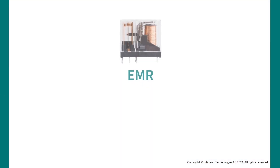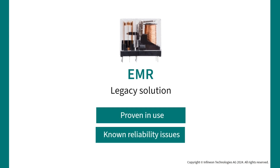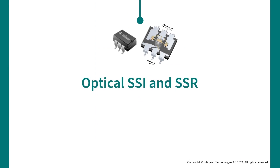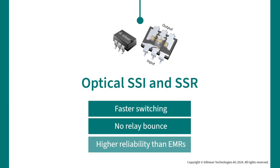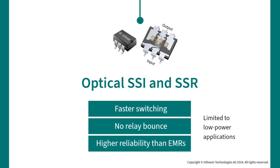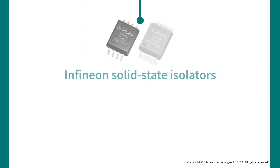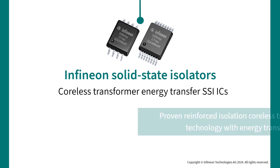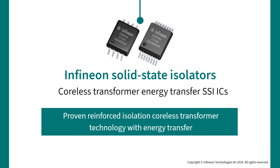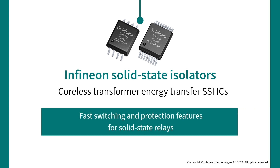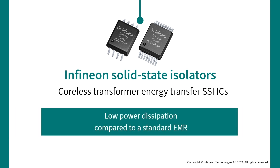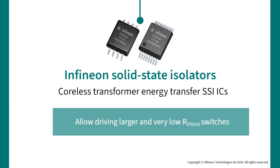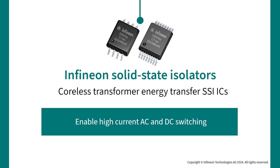Electromechanical relays have a significant presence in the market with proven performance but known reliability issues. Optical isolators and relays switch faster without contact bounce and provide higher reliability than EMRs, however they are limited to low power applications. Infineon's new coreless transformer energy transfer solid state isolators ICs, compared to standard EMRs and optical SSRs, use proven reinforced isolation coreless transformer technology with energy transfer, provide the fastest switching, add protection features, have low input power dissipation, allow driving of larger and very low RDS(on) switches, and enable high current AC and DC switching.